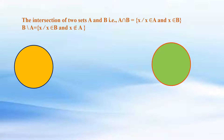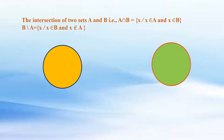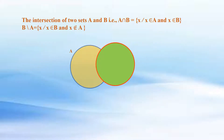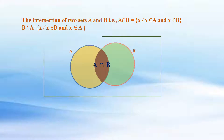The intersection of two sets A and B, i.e., A intersection B, is equal to the set of X where X belongs to A and X belongs to B.